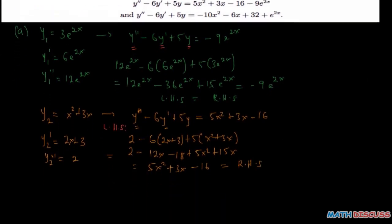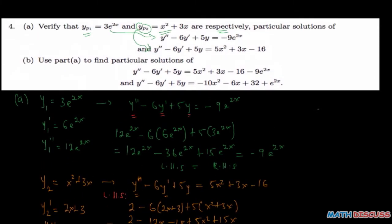This equals the right hand side, so we've been able to show that the left hand side equals the right hand side. Therefore, y2 is a solution of the differential equation given above. That solves part A. For part B, it says to use part A — the information we got — to find particular solutions of these non-homogeneous differential equations.